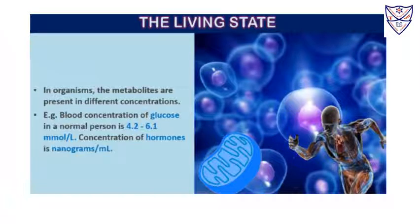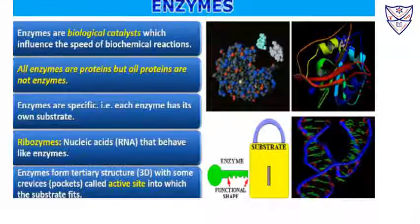In all organisms, metabolites are present in different concentrations. For example, the blood concentration of glucose in a normal person may vary from 4.2 to 6.1 mmol/L, and the concentration of hormones might be in nanograms. The living state is basically a non-equilibrium steady state which is required to be able to perform any work. Systems at equilibrium cannot perform any type of work. We understand that no living state will exist without metabolism.